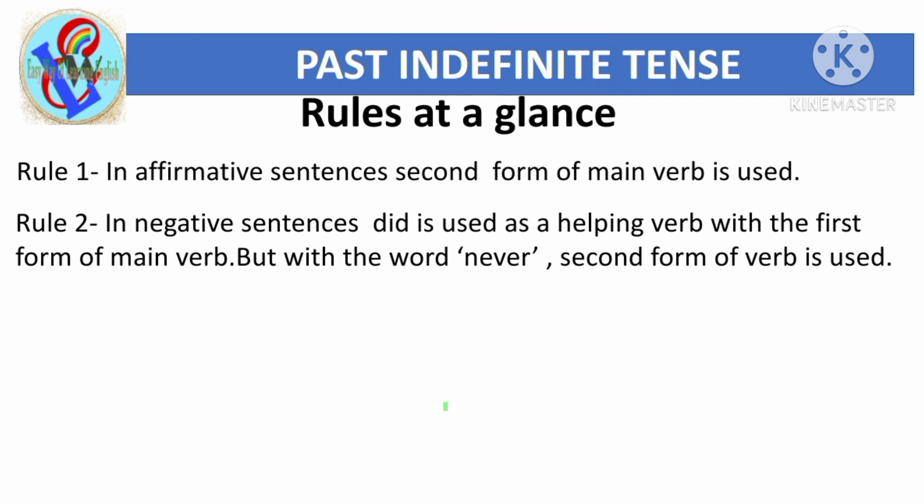When we have a negative sentence, we use 'did' as a helping verb, and we use the first form or base form of the verb. But if the sentence contains the word 'never', we use the second form of the verb and do not use 'did not'.